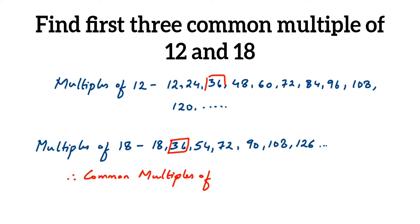You can see 36 is one common multiple, and 72 is the next common multiple, and next we have 108. So we got the first three common multiples here. You can stop here if they ask you to find out more multiples like four or five multiples.